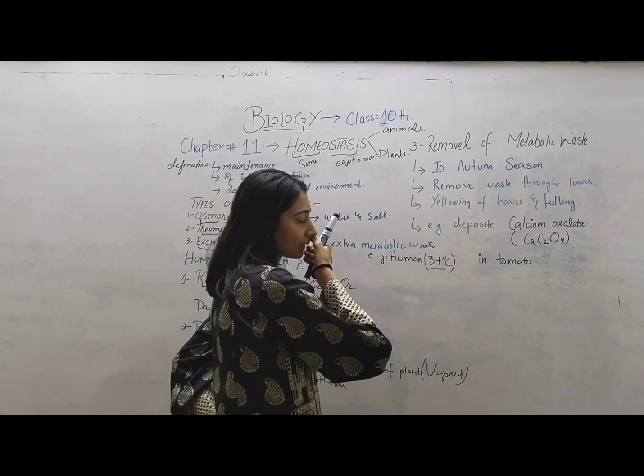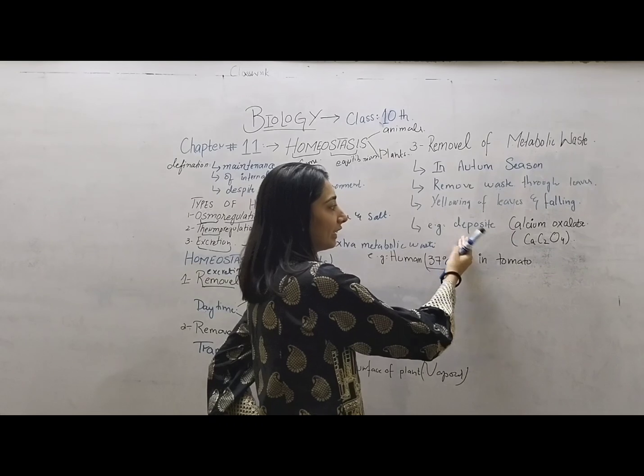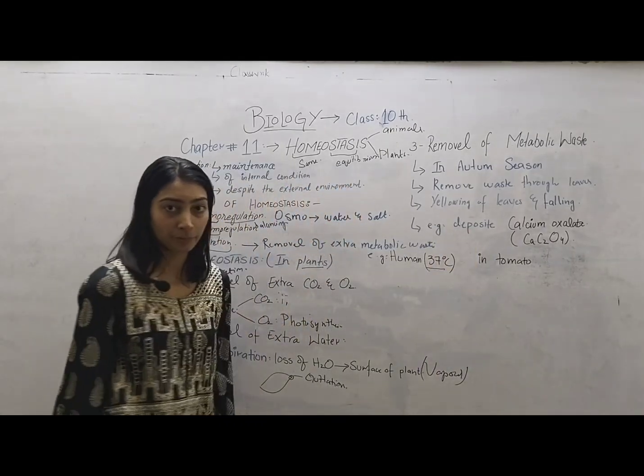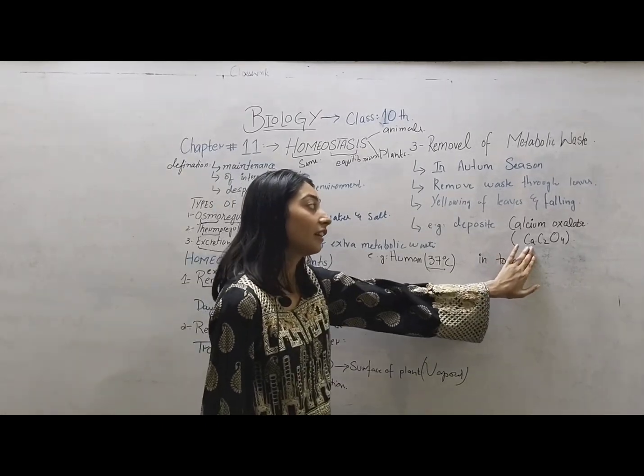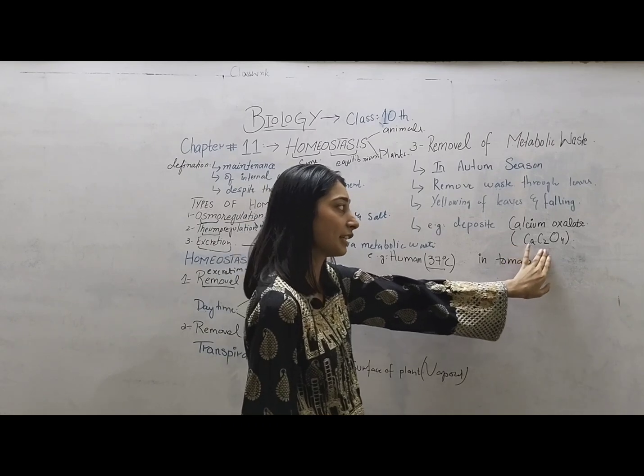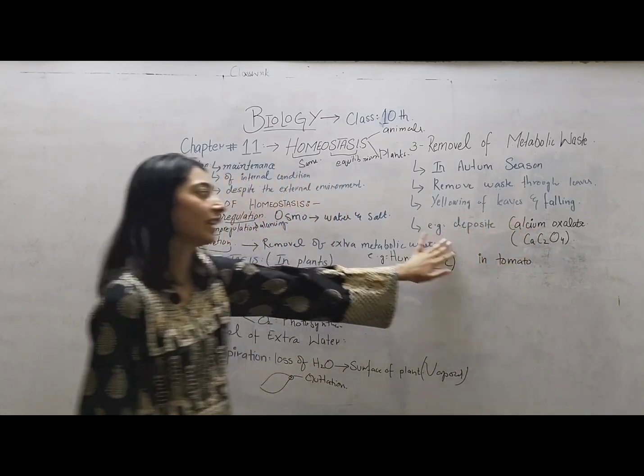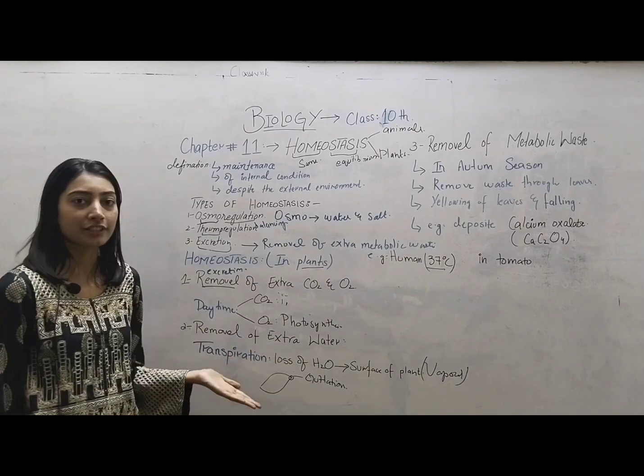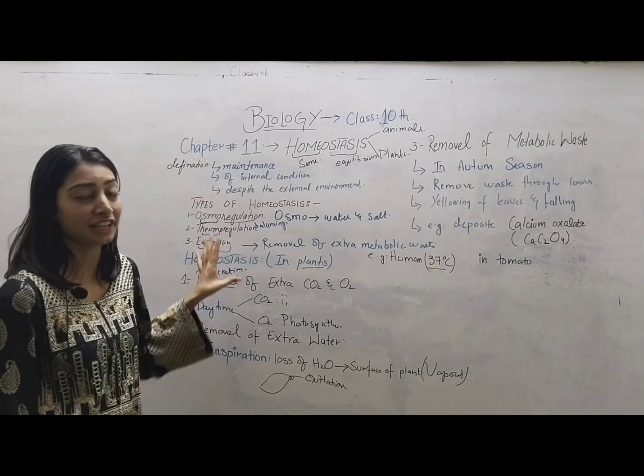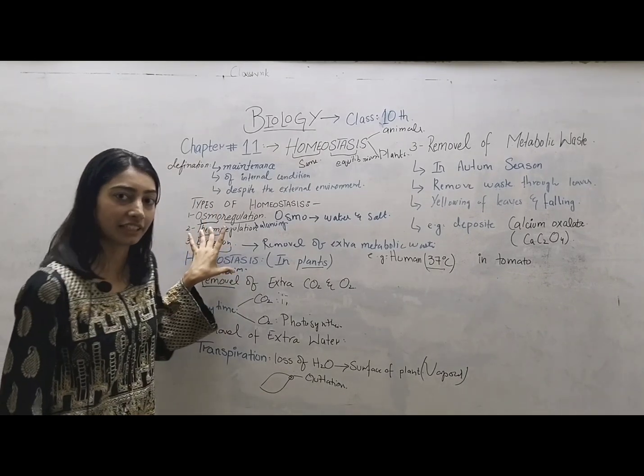For example, calcium oxalate is removed from tomato plants in crystal form. The calcium oxalate formula is CaC2O4. This is an example of excretion of metabolic waste. This concludes our discussion on homeostasis in plants and the introduction to homeostasis. Thank you.